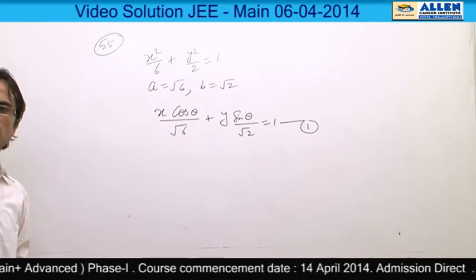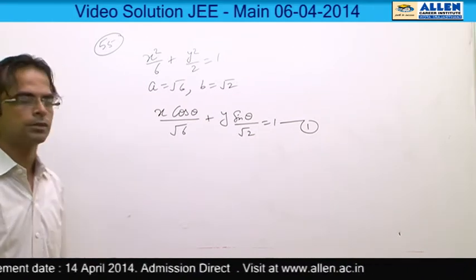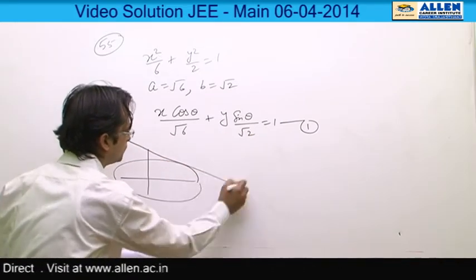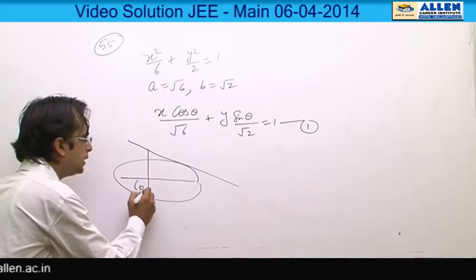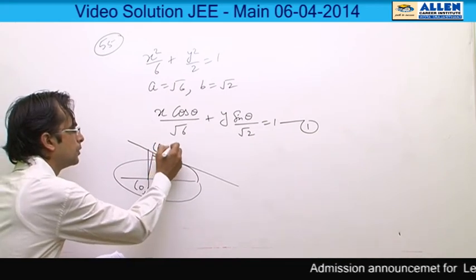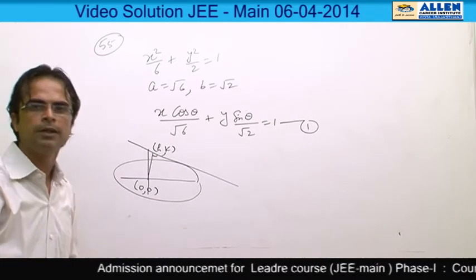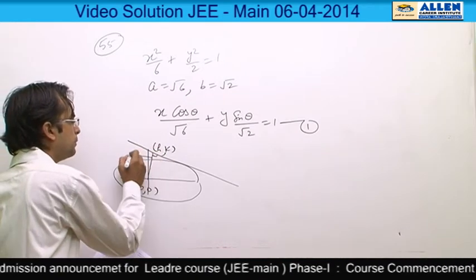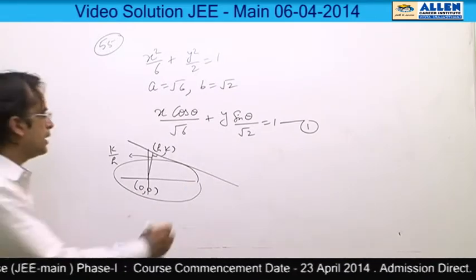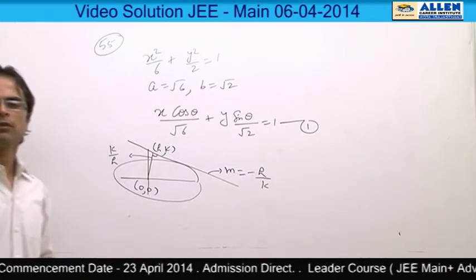We are to determine the locus of the foot of perpendicular drawn from the centre of the ellipse. The centre of the ellipse is (0, 0). Draw a perpendicular to this tangent; let (h, k) be the point whose locus is to be determined. This perpendicular line has slope k/h, so the perpendicular from the centre has slope −h/k.